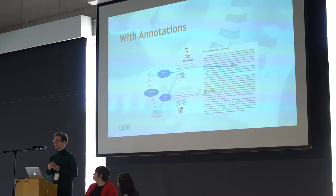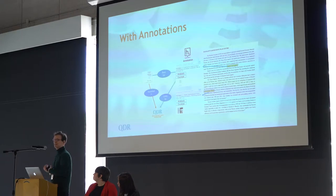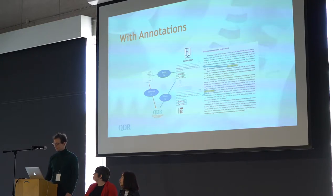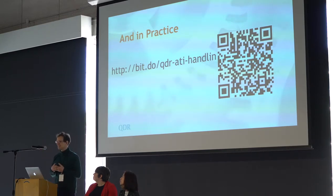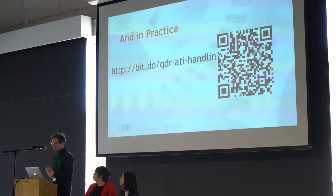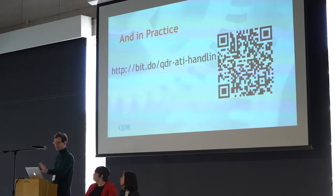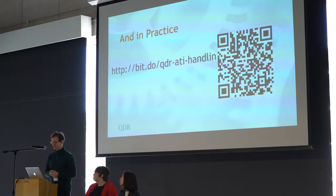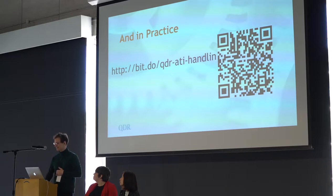I can then link to a primary source that I've digitized and put into our data repository, and a reader — instead of traveling to Moscow — can just click through and look at the link. The cool thing is this is not a vision; this is very much a practice. There's a QR code URL if you want to try this out. You will need to register for the repository to actually click through the source, but I think it looks really fun and adds a lot of depth to the article.